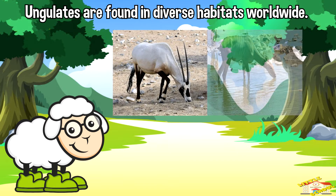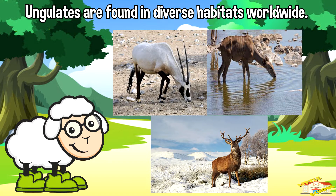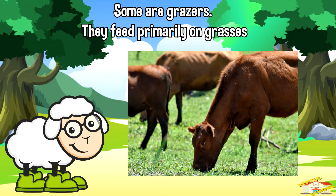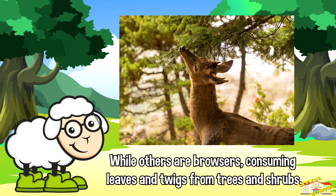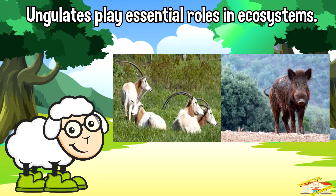Ungulates are found in diverse habitats worldwide. For instance, some are grazers, feeding primarily on grasses, while others are browsers, consuming leaves and twigs from trees and shrubs. Additionally, ungulates play essential roles in ecosystems as both prey and predators, as well as in seed dispersal and habitat maintenance.